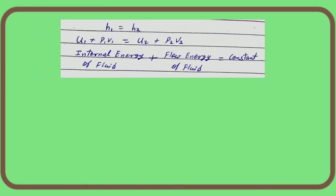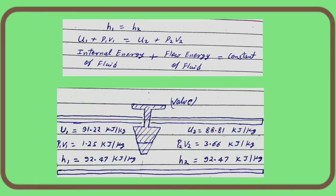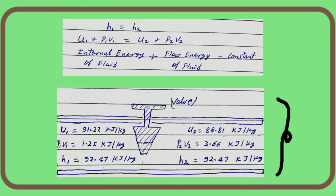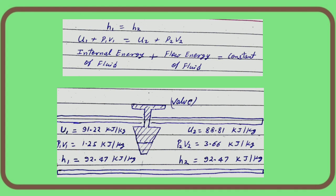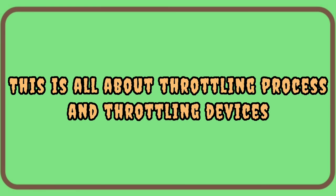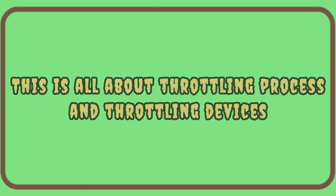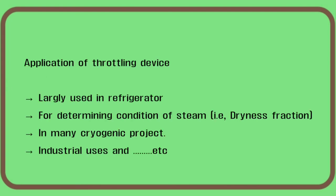To explain this with an example: suppose at the inlet of throttling the enthalpy value is 92.47 kJ. Because throttling is isenthalpic, the outlet enthalpy is also constant and equal to the inlet enthalpy. However, the internal energy at inlet and outlet are not necessarily the same, and similarly the flow energy is not individually constant. This is the throttling process, and with this we can perform thermodynamic analysis of throttling devices.